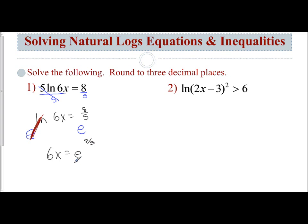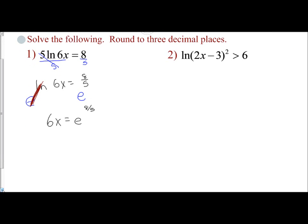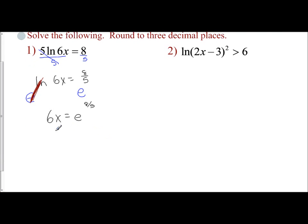What I like to do is I always like to solve for the perfect answer — not the decimal approximation — before I go to my calculator. So I'm going to get rid of my coefficient by dividing both sides by 6. That gives me the actual answer of x equals e to the 8 fifths power divided by 6.